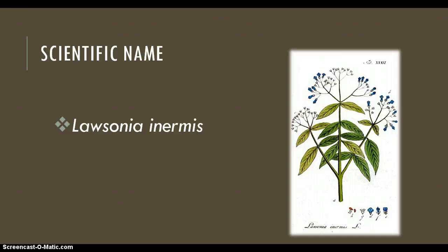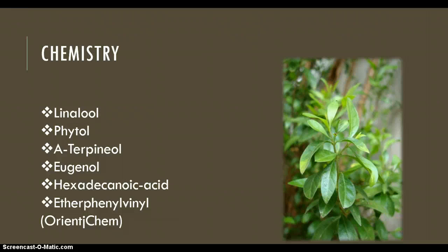The scientific name, as stated earlier, is Lawsonia inermis. Now we're coming to the chemistry makeup of the plant itself. I found this on orientjchem.org — they found the compounds of this plant through inspecting the essential oil derived from its leaves. The compounds include: linalool, phytol, atropinol, eugenol, hexadecanoic acid, and ethylphenyl. Again, that was from orientjchem.org.